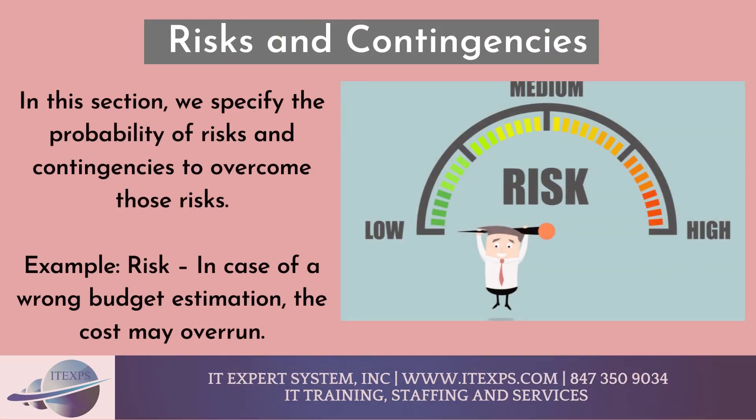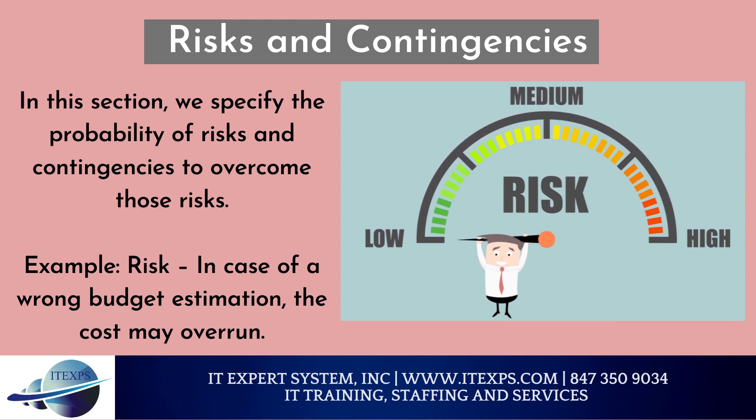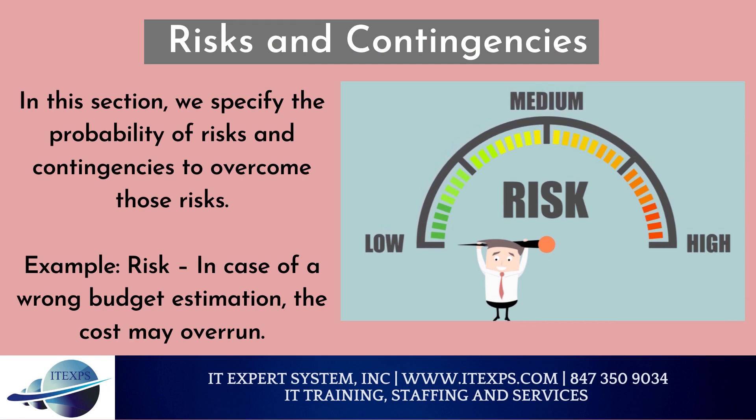Risks and contingencies: in this section, we specify the probability of risks and contingencies to overcome those risks. For example — Risk: in case of a wrong budget estimation, the cost may overrun. Contingency plan: establish the scope before beginning the testing tasks and pay attention in the project planning and track budget estimates constantly.